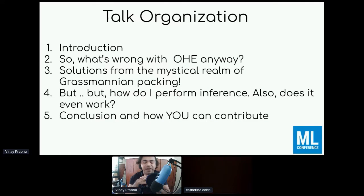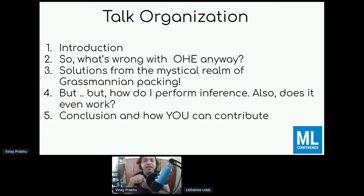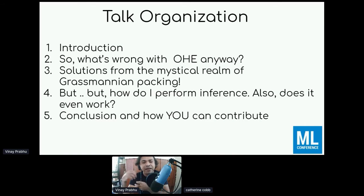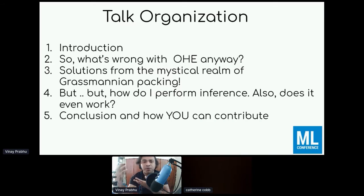We'll do a quick survey of what the community has done to demonstrate the shortcomings of one-hot encoding that most of you would have used in your classification pipelines. Then we'll visit the realm of Grassmannian packing and optimal space packing. We'll also talk about how to perform inference when training with non-one-hot encoded vectors, and give a brief tour of the tools we've curated for you to use and contribute back to the community.